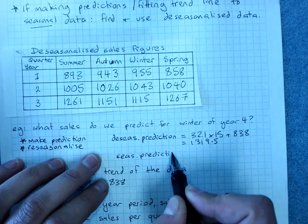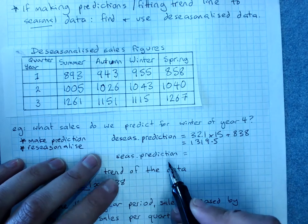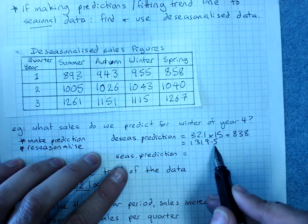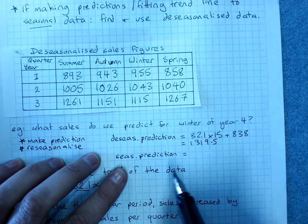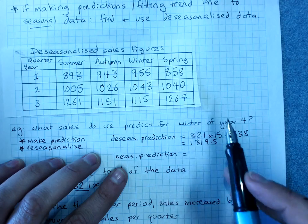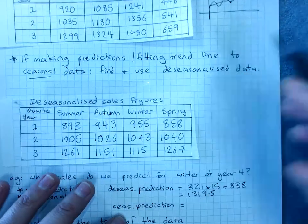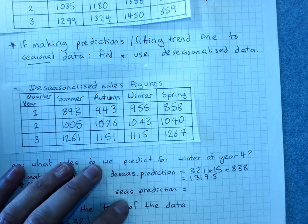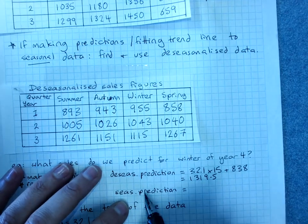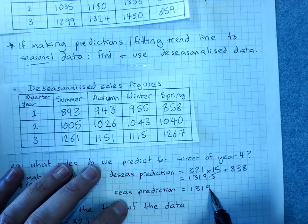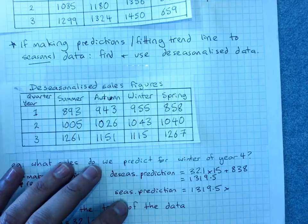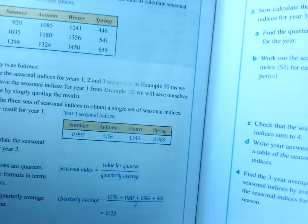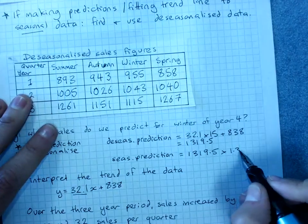We have to re-seasonalize our data. And of course, we re-seasonalize our data by doing the de-seasonalized amount multiplied by the seasonal index. So I take our de-seasonalized number, and our winter seasonal index was 1.345, times 1.345.